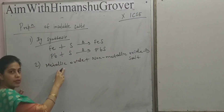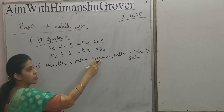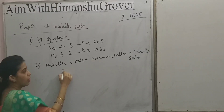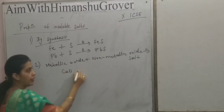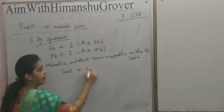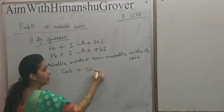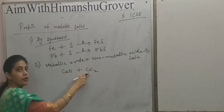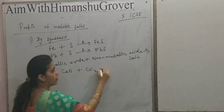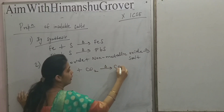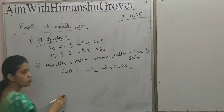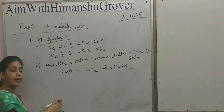Metallic oxide means basic oxide and non-metallic oxide means acidic oxide. For example, calcium oxide, CaO, when heated with carbon dioxide, CO2 — CaO is a metallic oxide and CO2 is a non-metallic oxide — when they are heated together then calcium carbonate, CaCO3, is formed, which is an insoluble salt.